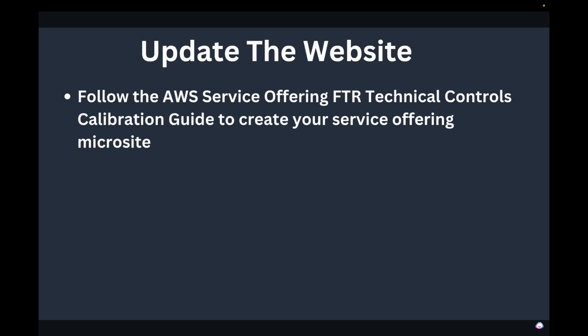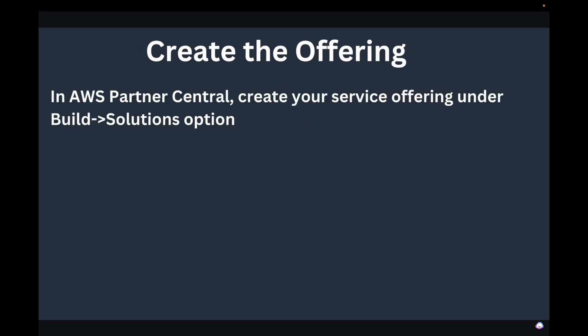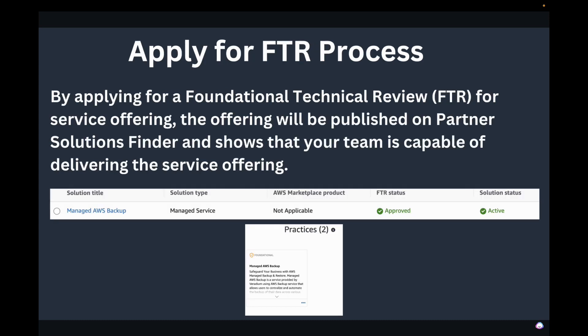The next step is to update your website. There is a resource called the AWS Service Offering Foundational Technical Review Controls Calibration Guide — it's a long name — available in Partner Central resources. You can download it, read it, and update your website accordingly. After that, log into Partner Central under the 'Build Solutions' option to create a new service offering.